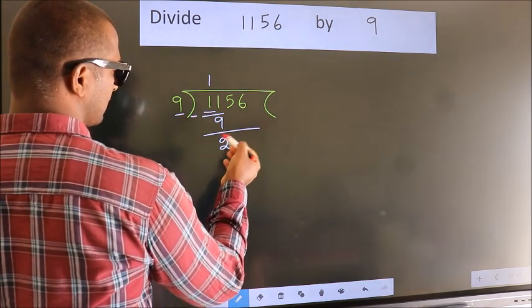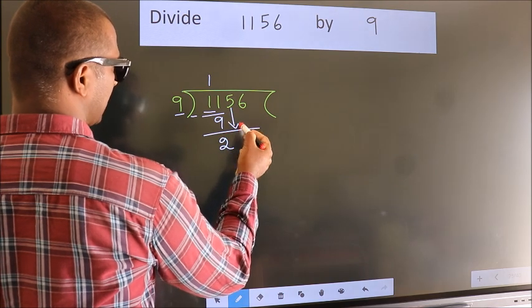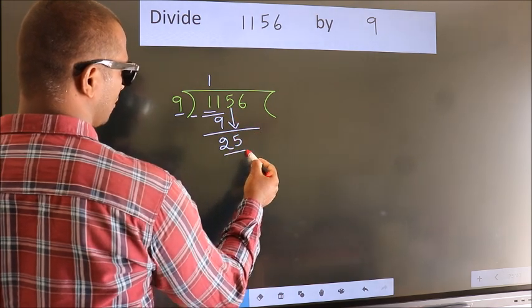After this, bring down the beside number. So 5 down. So 25.